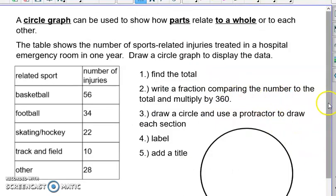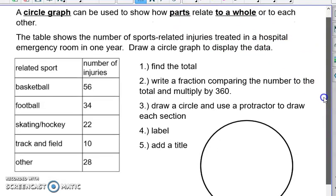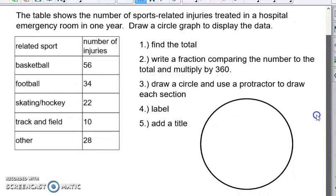Last one I want to talk about is probably the most work for us. It's called the circle graph. And you want to choose this one when you're showing parts of a whole. So in this one, we're talking about sports related injuries. And first thing you need to do is total your number of injuries in this case. So I totaled it for us and there's 150 injuries we're talking about. Then you want to write a fraction comparing the number to the total. And then we're going to multiply it by 360. A circle has 360 degrees. And so that's going to tell us how big to make our section.